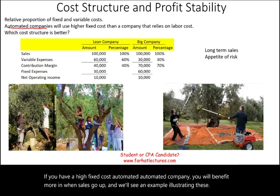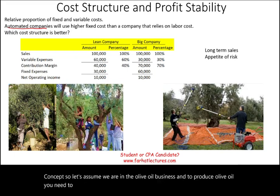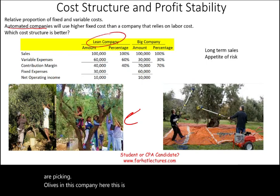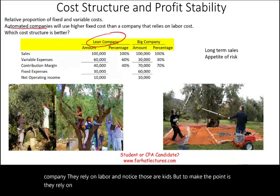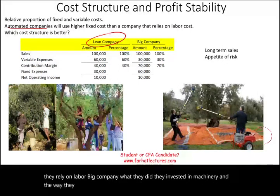Let's assume we are in the olive oil business. To produce olive oil, you need to first pick the olives — we have farms and we are picking olives. This company we're going to call the lean company; they rely on labor. The big company, what they did is they invested in machinery, and the way they pick the olives is through using a machine.